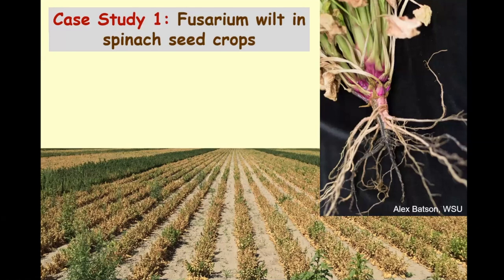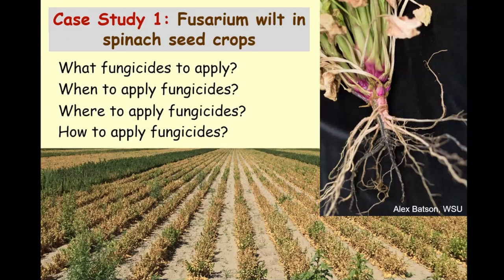This is Fusarium wilt in spinach seed crops. If you think you have this disease in your field, or you think it might develop, what can you do in terms of fungicides? Are there fungicides you can use? What should you use, how should you use them, and when should you use them? These are really important questions to ask yourself.